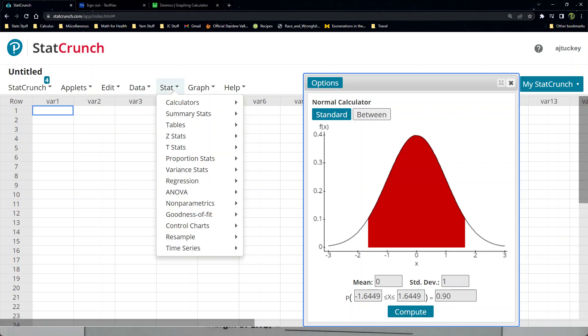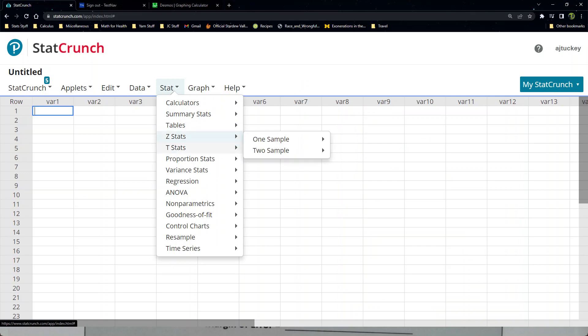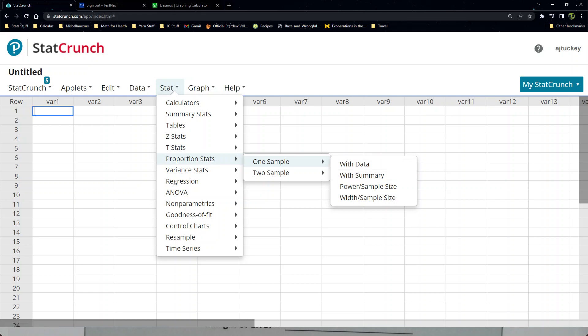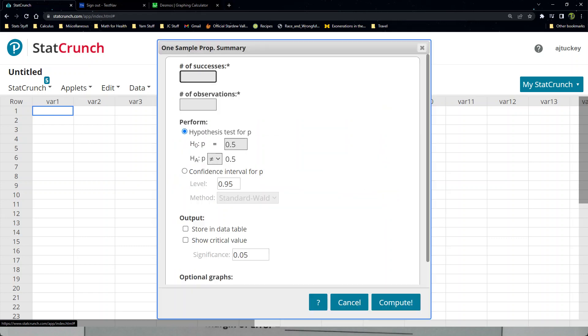All right, so Stat, Proportion Stat, one sample, and I'm not clicking by the way, I'm just letting my mouse hover and it just kind of opens up the next panel. And now I'm out of arrows so I have to choose. Now with data, you use that one if you have a raw data column, you know yes no no no yes yes no no like sitting there in a column which we don't have and we never really have it. So we're going to use with Summary right there.